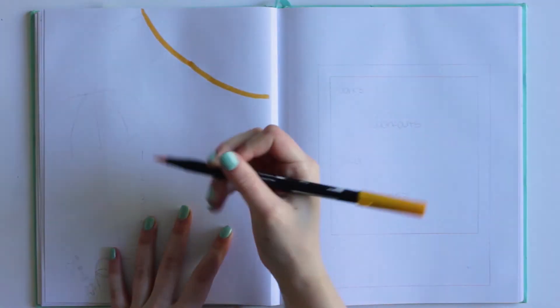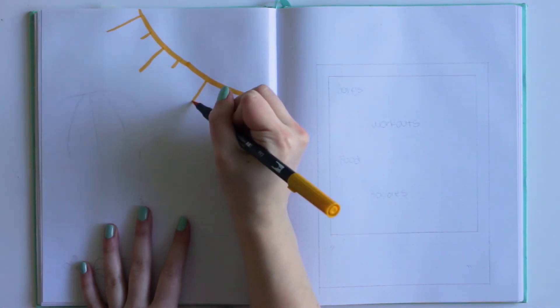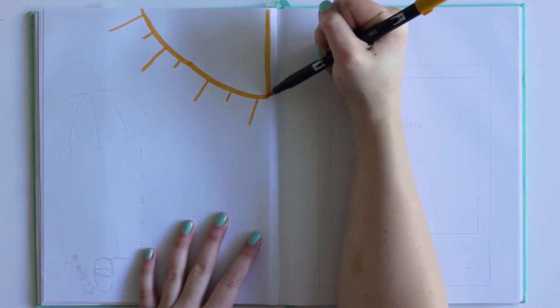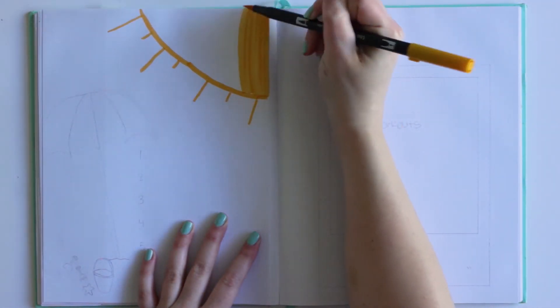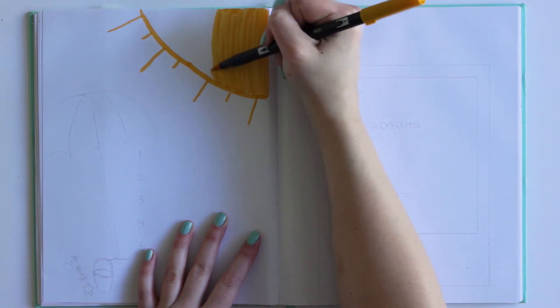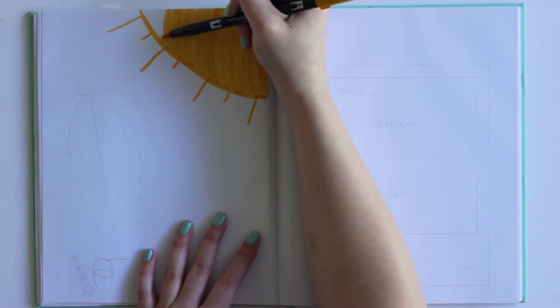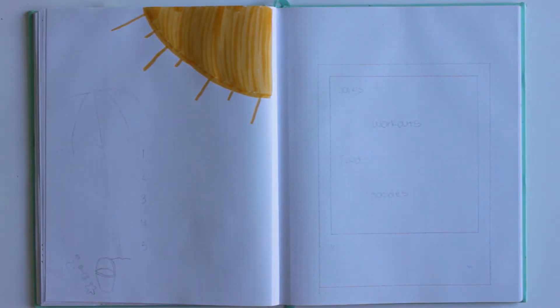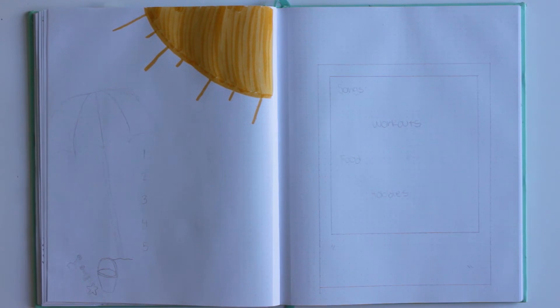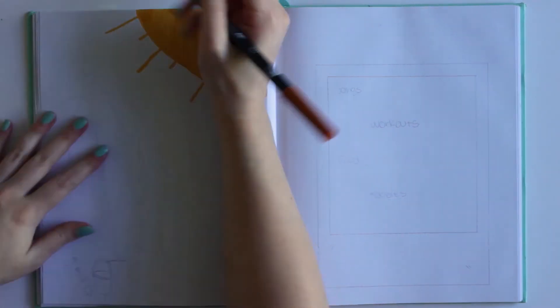And next up we are doing my monthly goals spread. I put this in the back because I totally forgot to put it in the front of my weekly spreads, so I still wanted them, so I thought, okay, I guess I'm just going to have to put it in the back. But anyways, better than not having it, right?